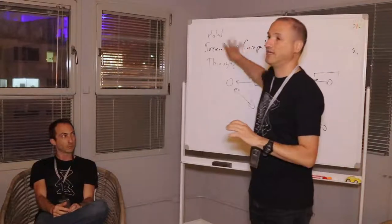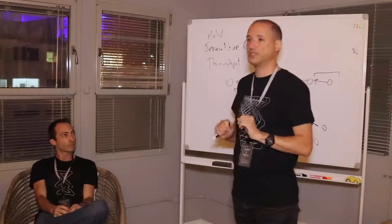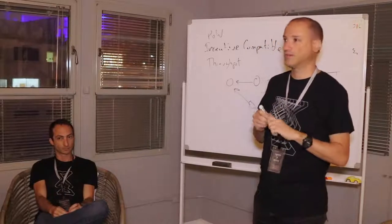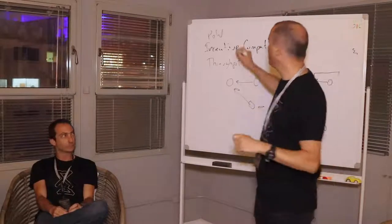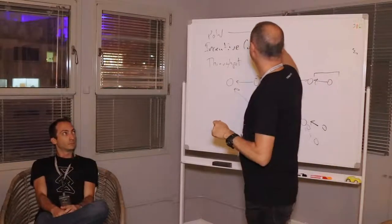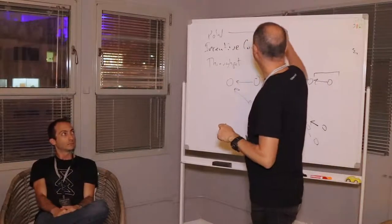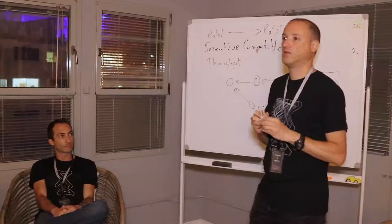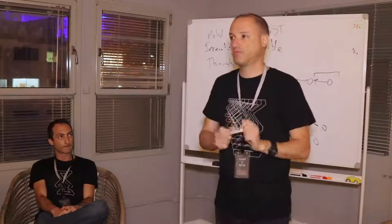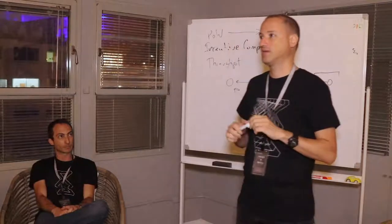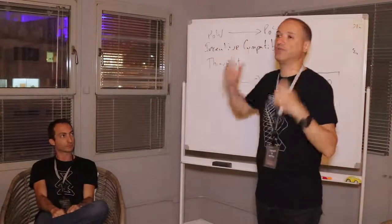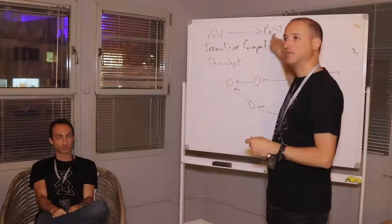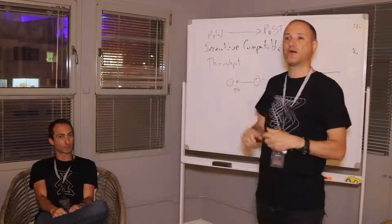Those are the three motivations. How do we solve them in Spacemesh? The first thing we do is replace proof of work with a different resource we call proof of space time. In a proof of work, you're showing you have CPU. In a proof of space time, you're showing you have storage. It's called space time because the actual cost is showing you used your storage over a period of time — like paying rent on storage per month, not just owning it.